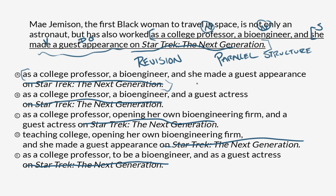The classic example of parallel structure is Julius Caesar saying 'I came, I saw, I conquered.' That's parallel — three little sentences, each following the same structure: I, verb; I, verb; I, verb. That's parallel.